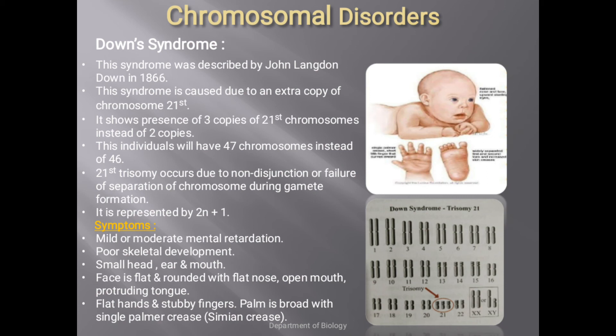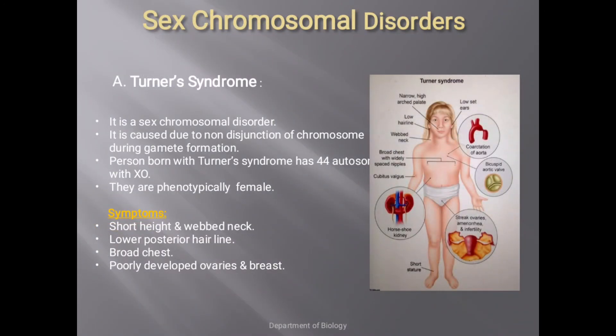Symptoms of Down syndrome include mild to moderate mental retardation, poor skeletal development, small head, ears, and mouth, a flat and rounded face with a flat nose, open mouth, and protruding tongue with frequent salivation. Hands are flat with stubby fingers, and the palm shows a single palmar crease — known as the simian crease — instead of the normal multiple lines.